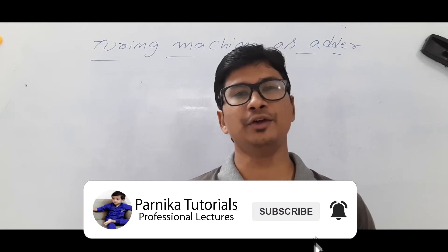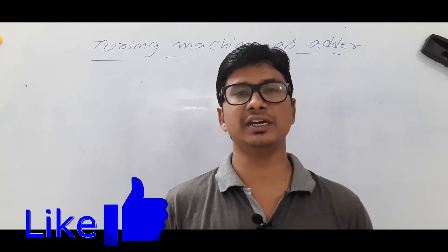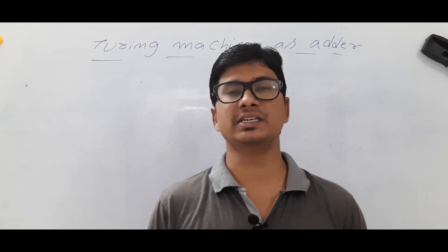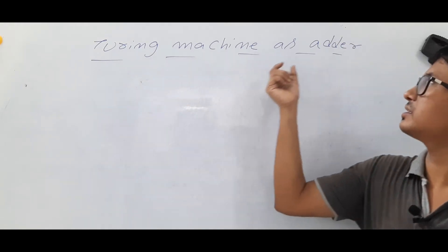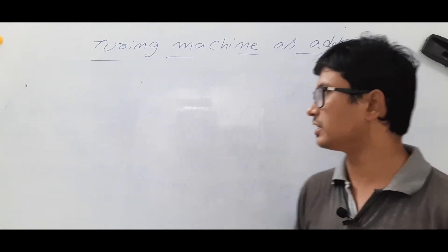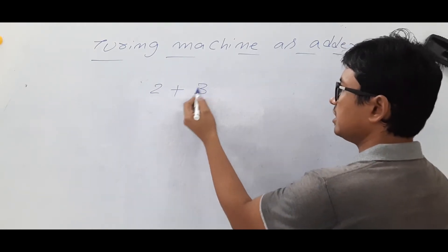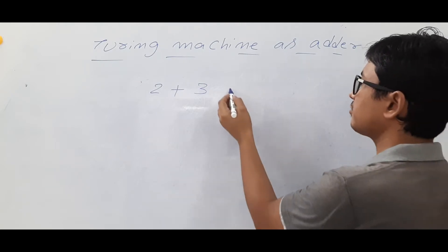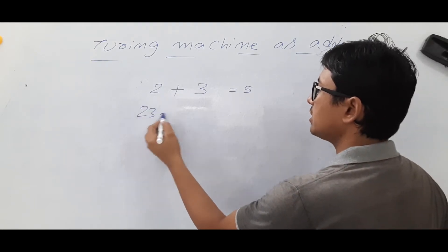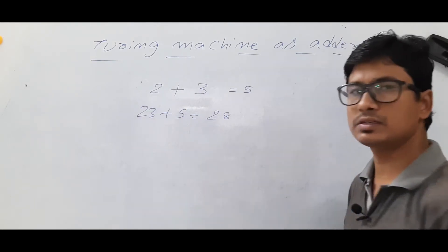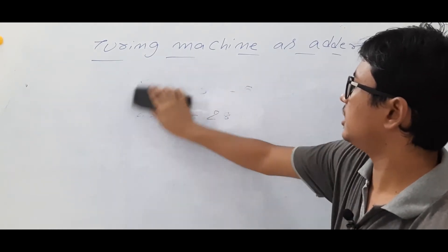Good morning friends, I hope everyone is doing well. I request everyone to watch my videos in a sequence for better understanding. In this video I want to discuss about a Turing machine as an adder — it has to perform addition. Suppose if I have 2 plus 3, I should get 5. If it is 23 plus 5, I should get 28.